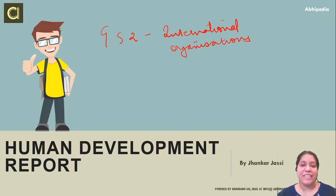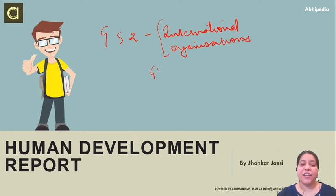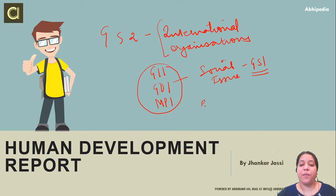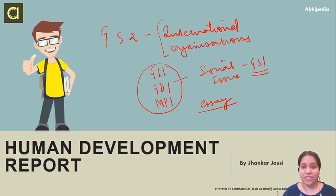We will discuss in detail what is the report, what is the theme, and what are the objectives of this report. We will cover some indices such as the Gender Inequality Index and Gender Development Index. We will also discuss the Multidimensional Poverty Index. All these indices are important for your mains examination. You can use this data in your social issues paper, which is GS1, and also in your essay.